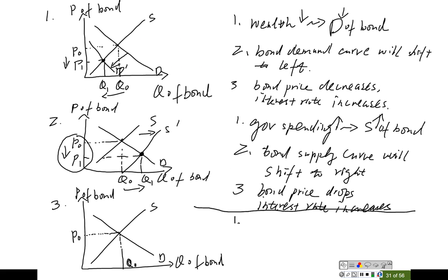First step: we have to analyze what happens to the bond market if stock prices are expected to increase. Does this event affect supply or demand? Keep in mind that as investors, you can either choose to invest in bonds or stocks — stocks and bonds are kind of like substitutes. This is related to 'other assets' on the demand side. If stock prices are expected to increase, stocks become more attractive to investors, so investors are going to move money into the stock market, meaning less money is available to buy bonds.